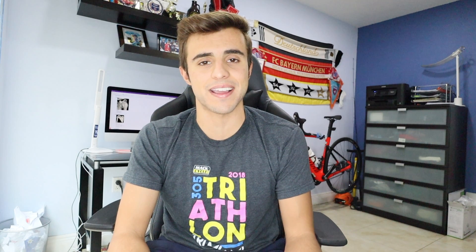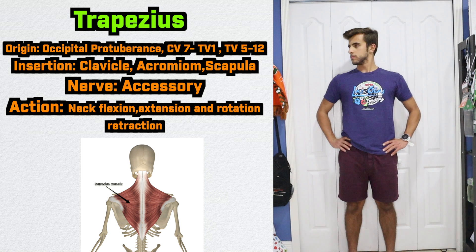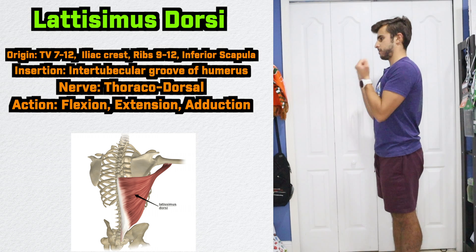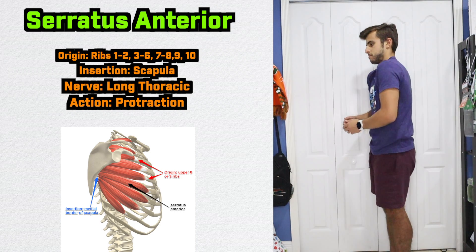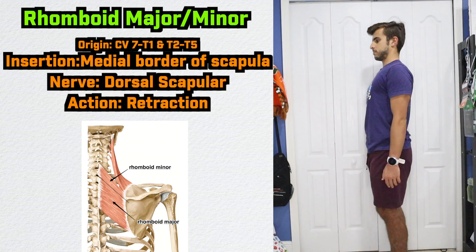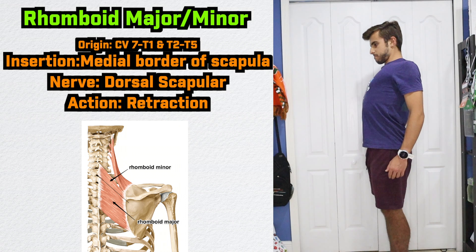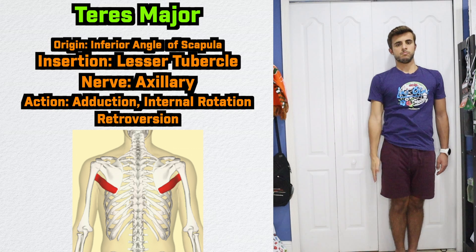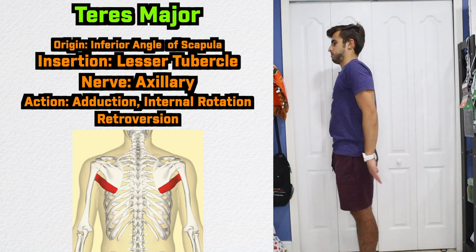The last set of muscles, which are the hardest to memorize because they have a lot of origins, insertions, and different actions, are the muscles of the back and neck. One of the major back muscles is the trapezius, responsible for neck flexion, extension, and rotation, but it also performs retraction. Then we have the latissimus dorsi, which performs flexion, extension, and adduction. The serratus anterior, located within the ribs, has protraction as its main action. We have the rhomboid major and minor, which retract the scapula. Originating from the scapula, we have the teres major, which performs adduction, internal rotation, and retroversion.